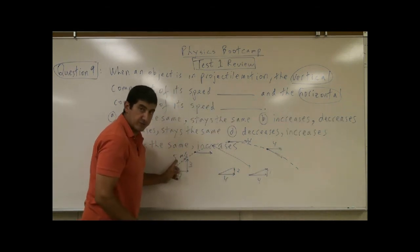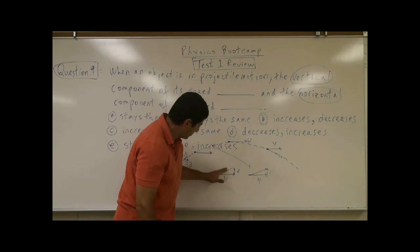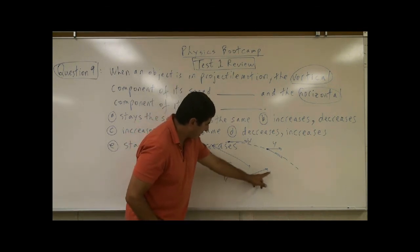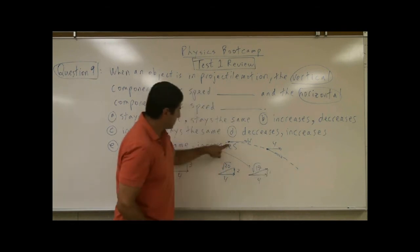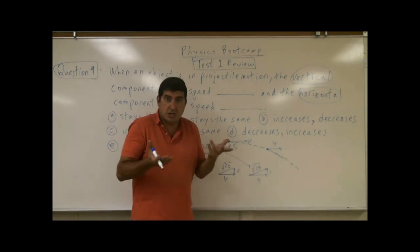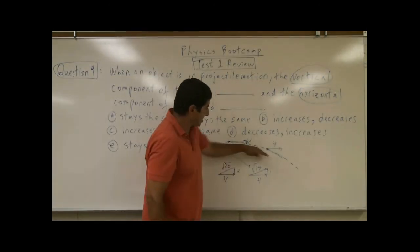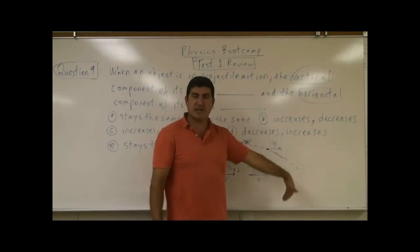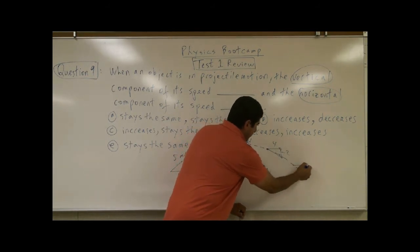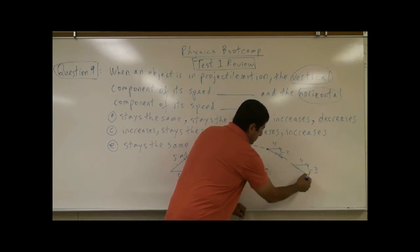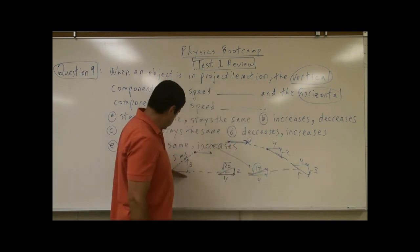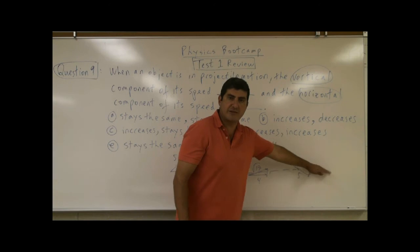By the time it gets here it should be four and one, so the total speed is the square root of 16 plus 1 — square root of 17. At the top the only speed is horizontal so it's four. Coming back down the vertical velocity becomes negative, going to negative two, then four and negative three, so when it returns to the same height you still have the three-four-five triangle.